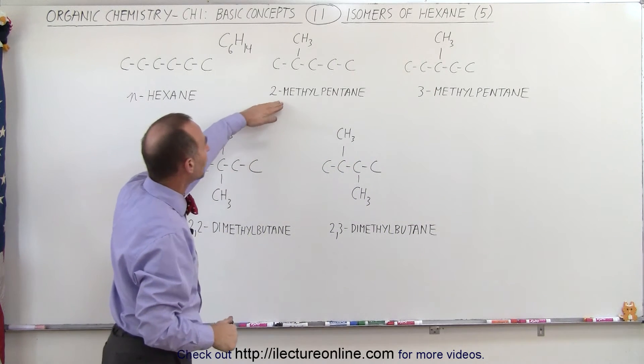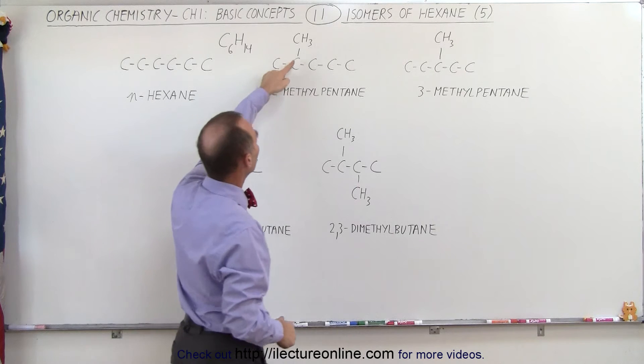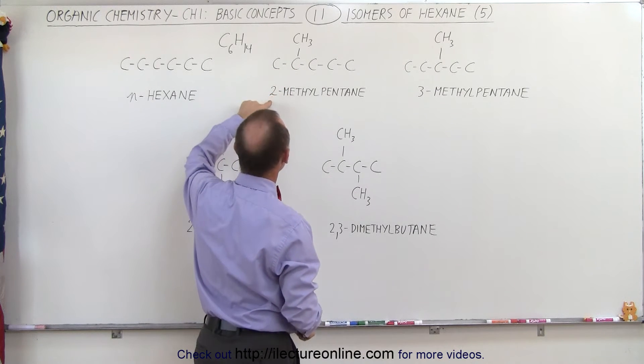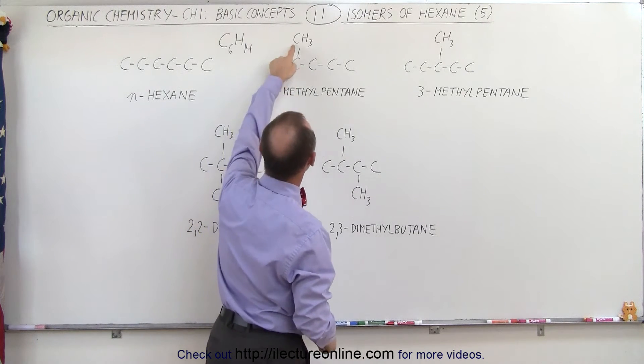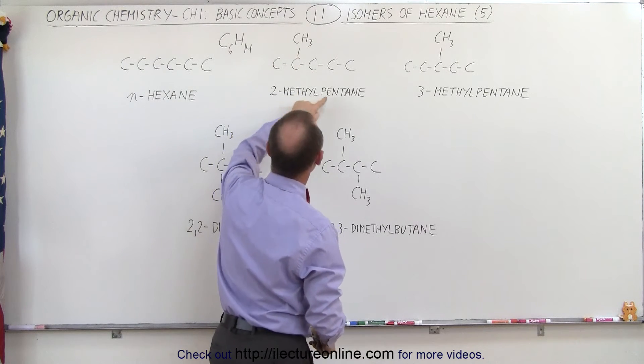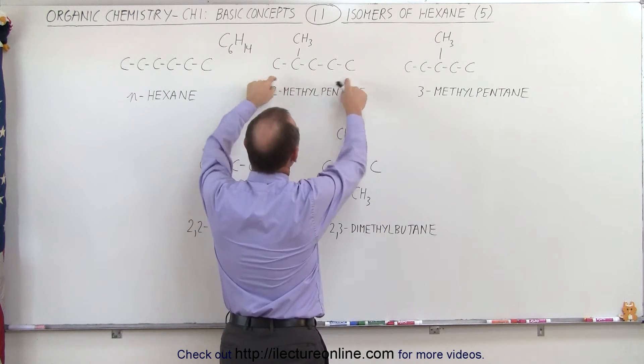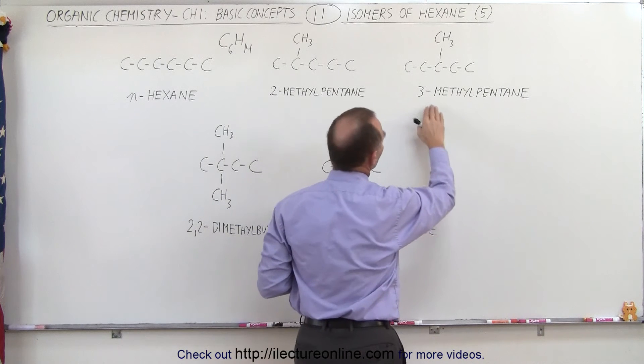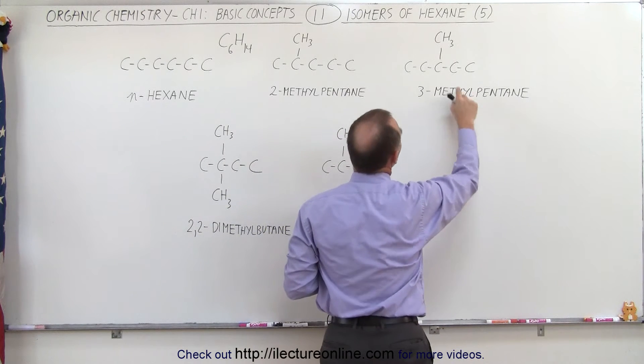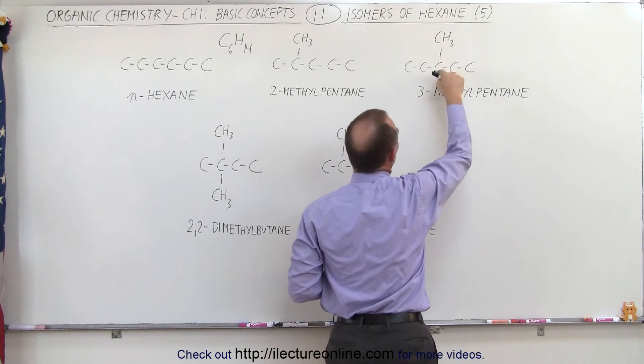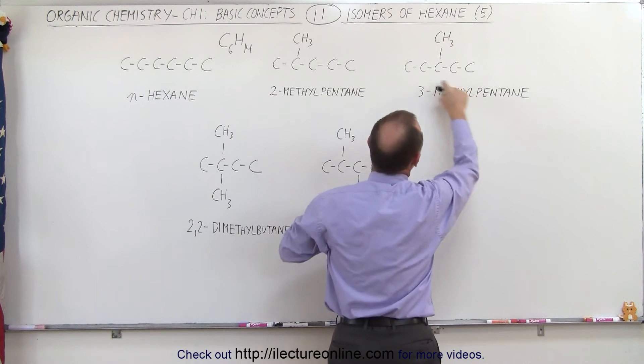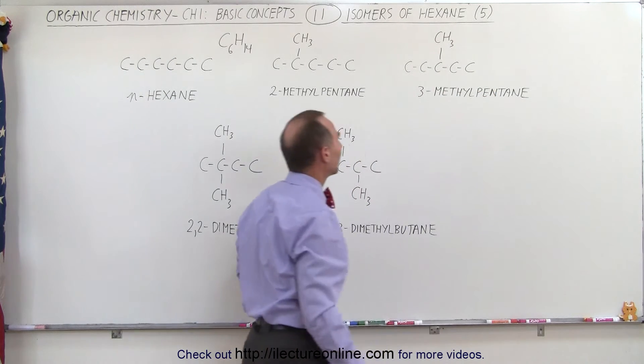So the way we name these is, since we're connected to the second carbon here, we have a 2-methylpentane. Methyl is, of course, the group over here, and pentane is the remaining five carbons in the string. Here we call this 3-methylpentane, because the methyl group is connected to the third carbon, and pentane again, because we have five carbons in a string there.